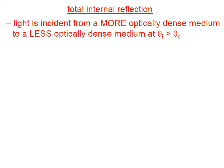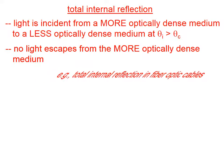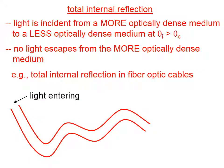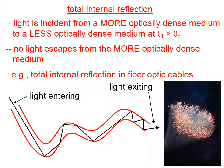In total internal reflection, light is incident from a more optically dense medium to a less optically dense medium at an angle of incidence greater than the critical angle. In such a case, no light escapes from the more optically dense medium. One example of total internal reflection is in fiber optic cables: light enters from one end and is reflected in a series of straight-line paths through the cable. As long as the light hits the boundary at an angle greater than the critical angle, the light is completely and totally reflected — it is not refracted at all.